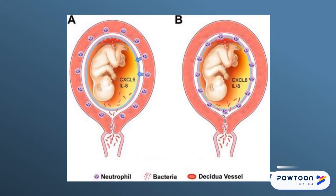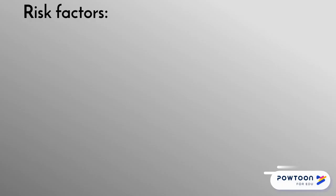This slide shows chemotactic stimuli that bring neutrophils into the fetal membranes. Figure A shows an increase in the amniotic fluid concentration of chemokines, which induces neutrophils to migrate towards the amnion, shown by the arrows. In figure B, the consequence is maternal neutrophils which infiltrate the chorioamniotic membranes from the decidual vessels.